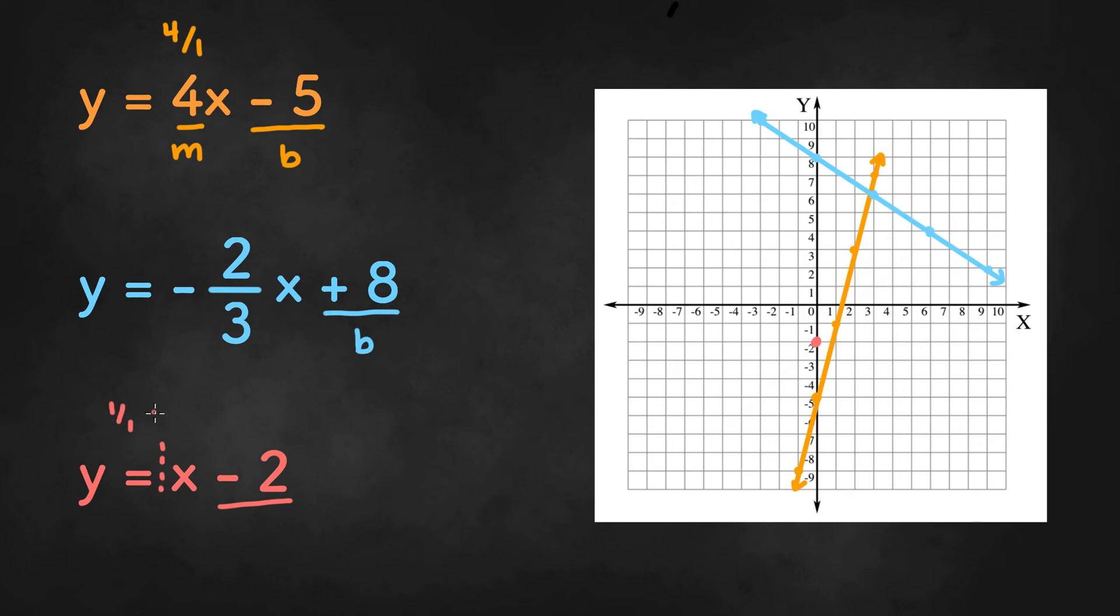So we're going up 1 and right 1 or down 1 and left 1. So we can go up 1 and right 1, up 1, right 1, and so on.